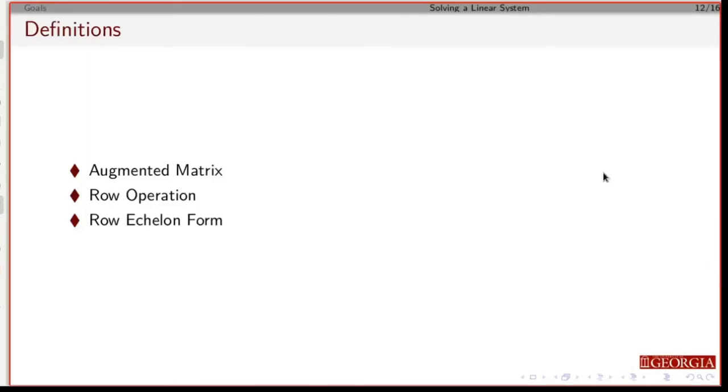So what did we have here? We had a number of things. We had the augmented matrix. This is the matrix that's in this form.